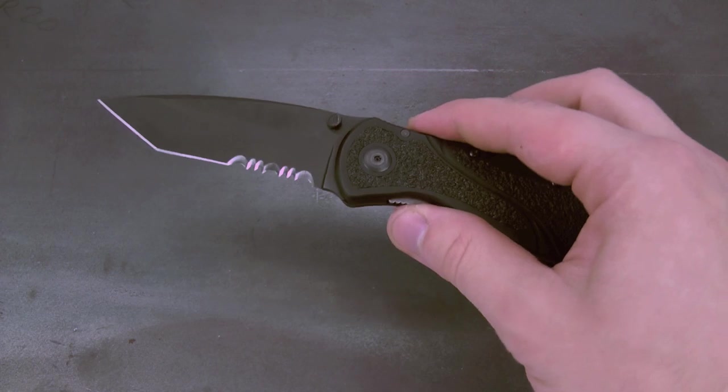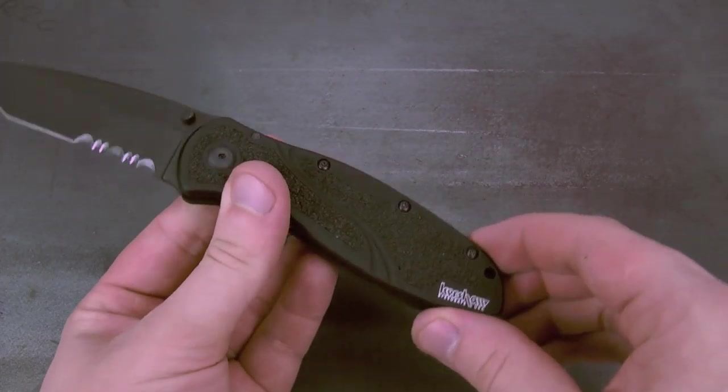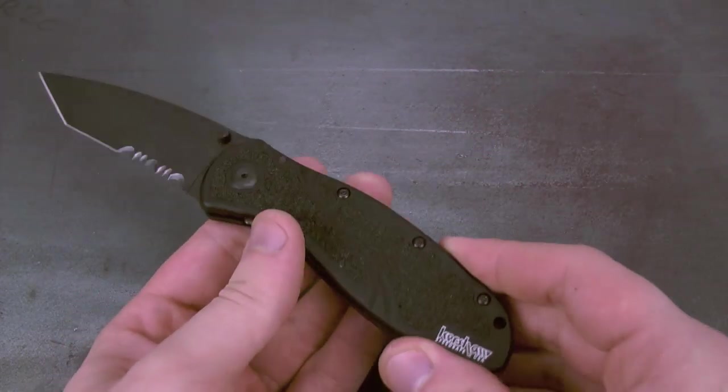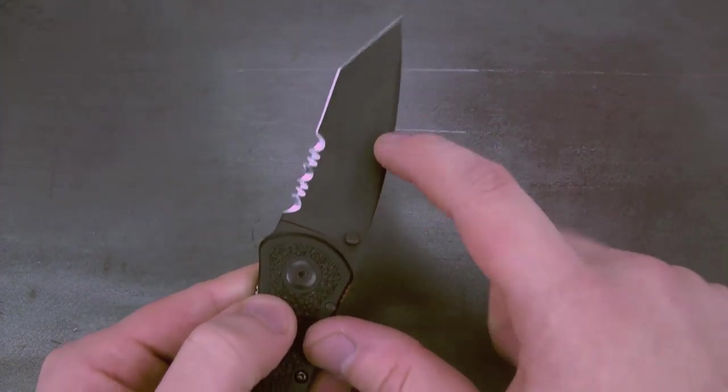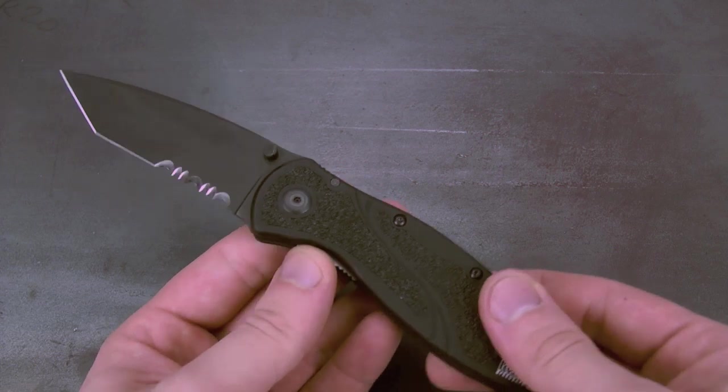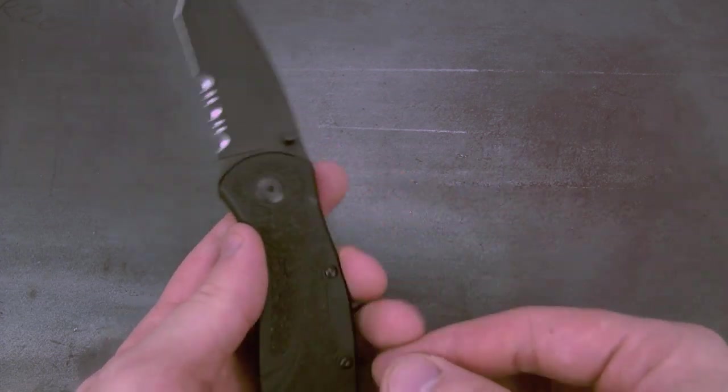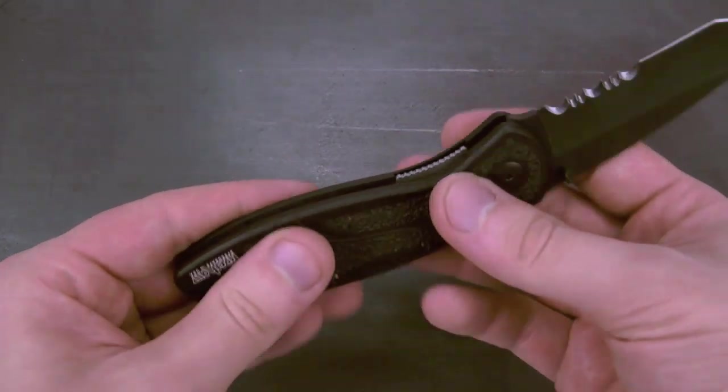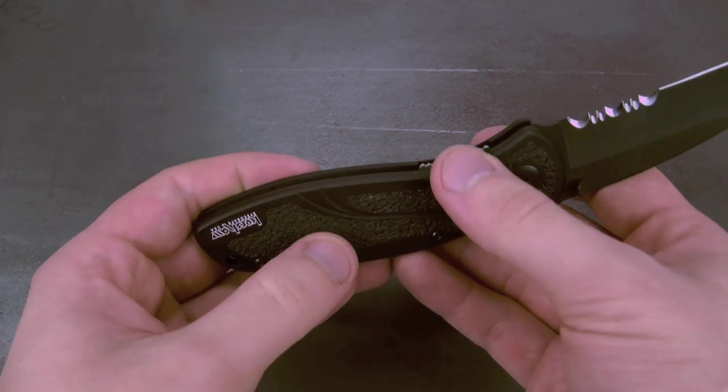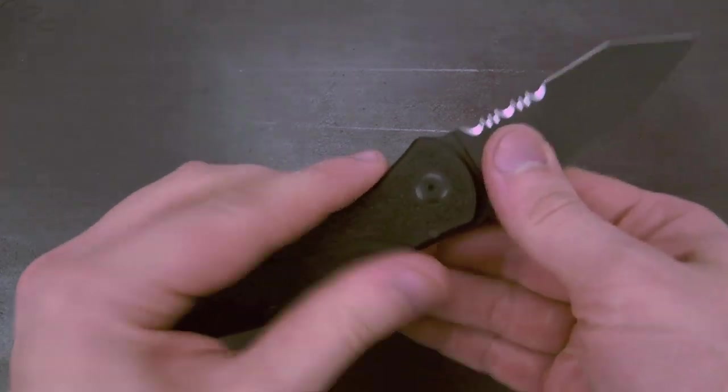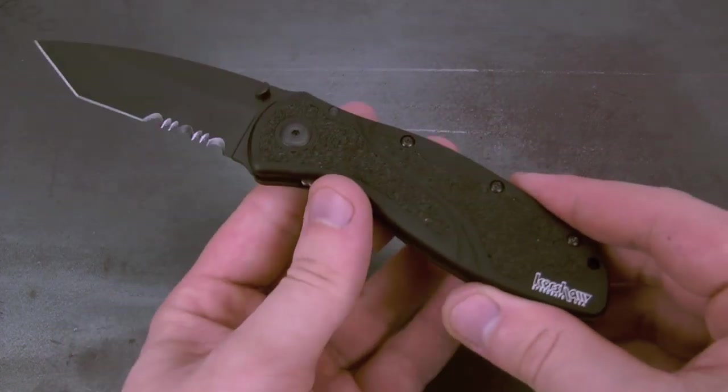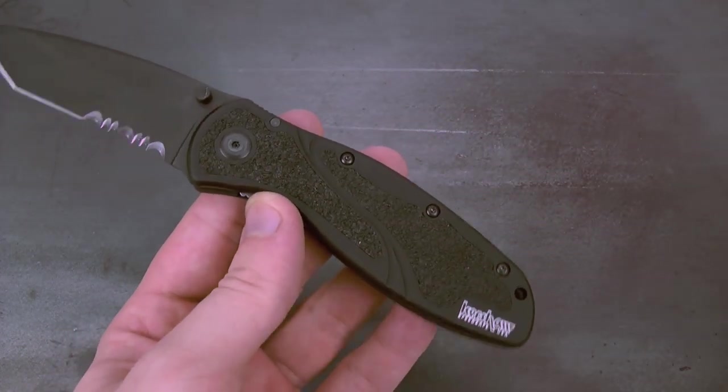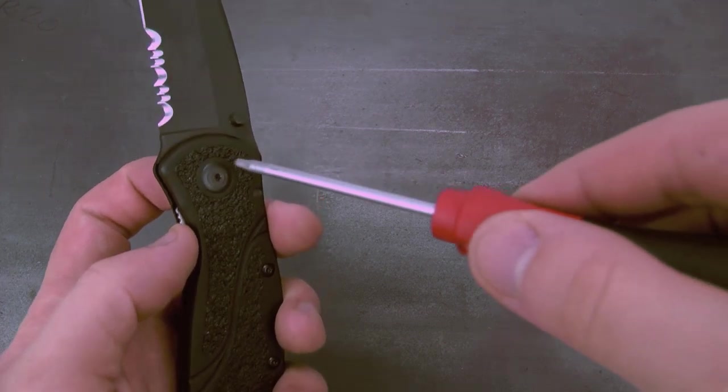So, this is Tanto Blur. As usual, before you begin any disassembly procedures, you always want to make sure your blade is open. As I said in the last video, you need to do that because otherwise everything is under pressure inside. And when you pop off the front scale, the blade can go flying and that's just not cool.